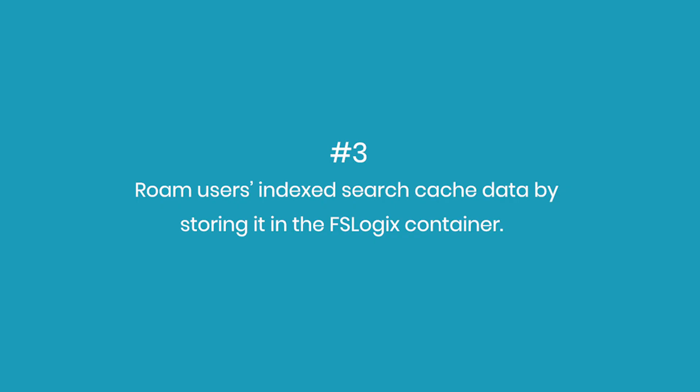If you have Windows Search enabled, every time the user logs in, if an index cache database doesn't yet exist, Windows Search will start building one based on the configuration on the session host. Generally it's going to try to index all of the Outlook data and maybe other personal data the user may have. If you don't have index search roaming properly enabled with FSLogix, this is going to happen each and every time the user logs into a session host they haven't logged into before, generating a lot of extra disk IO. Be sure to configure search index roaming with FSLogix and have it stored as part of the profile.